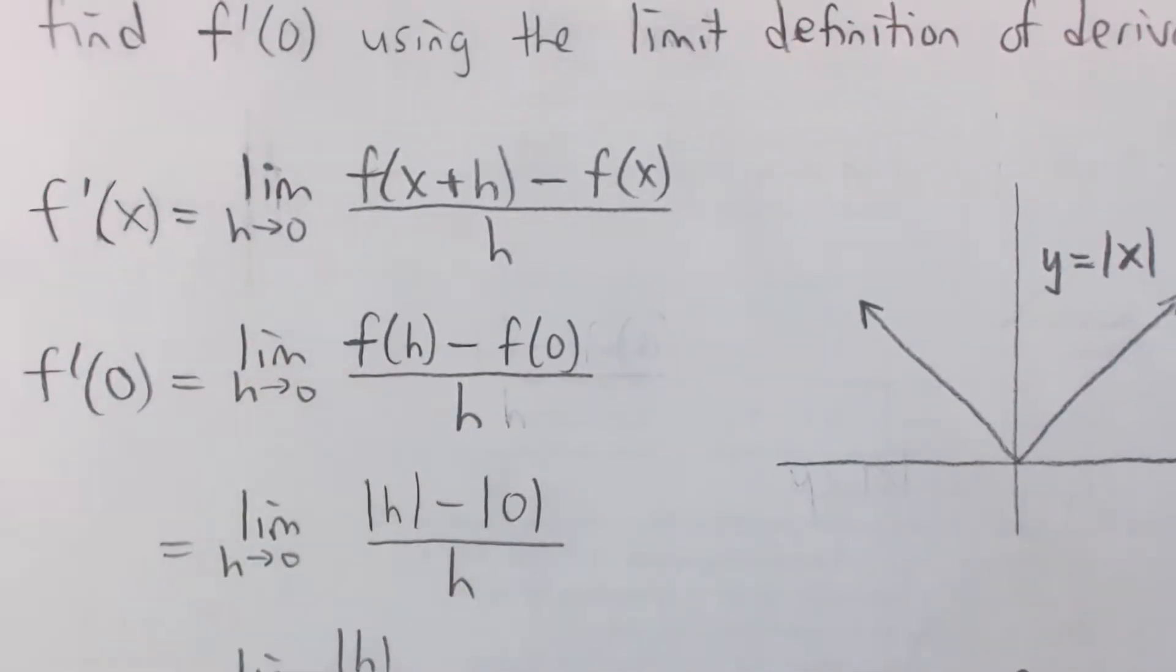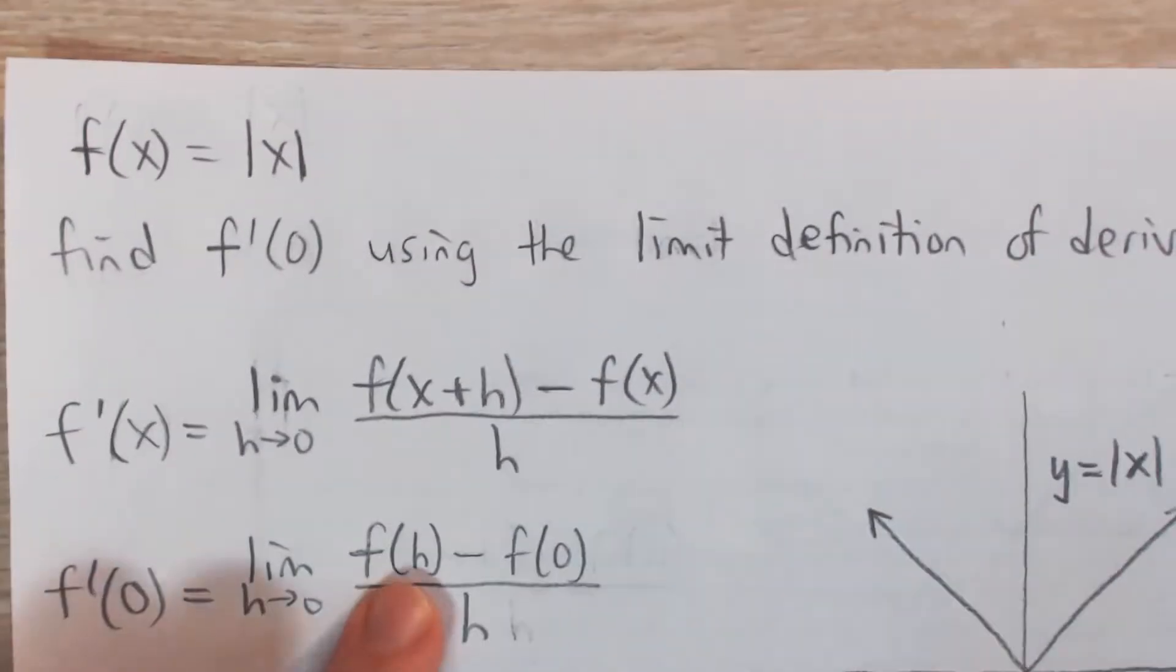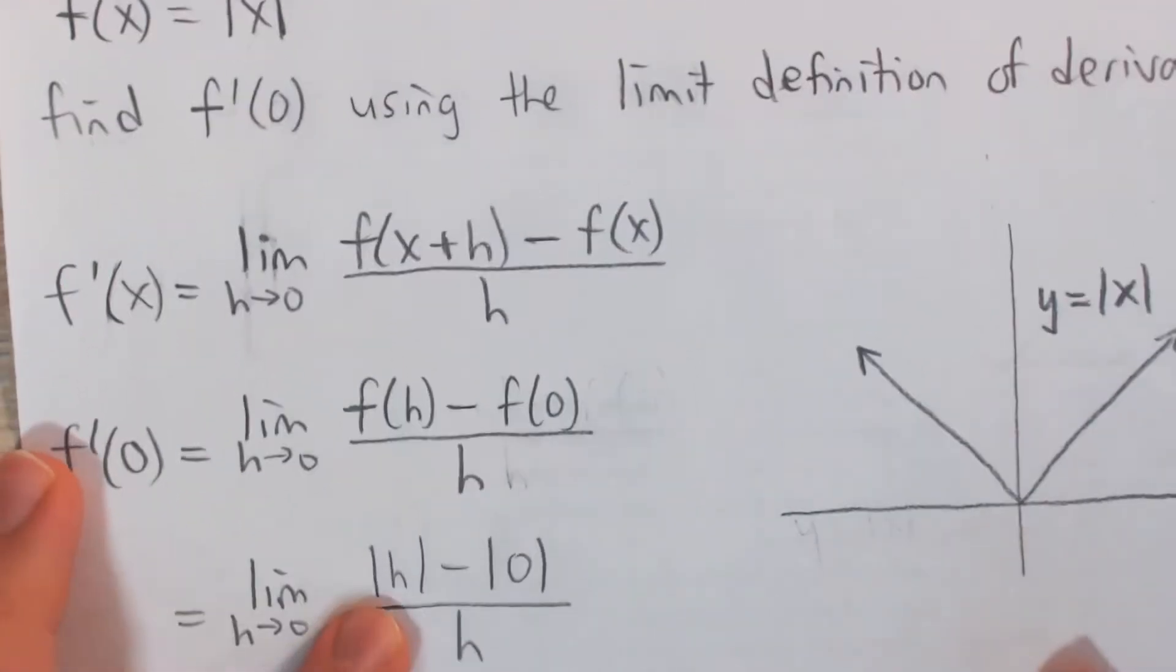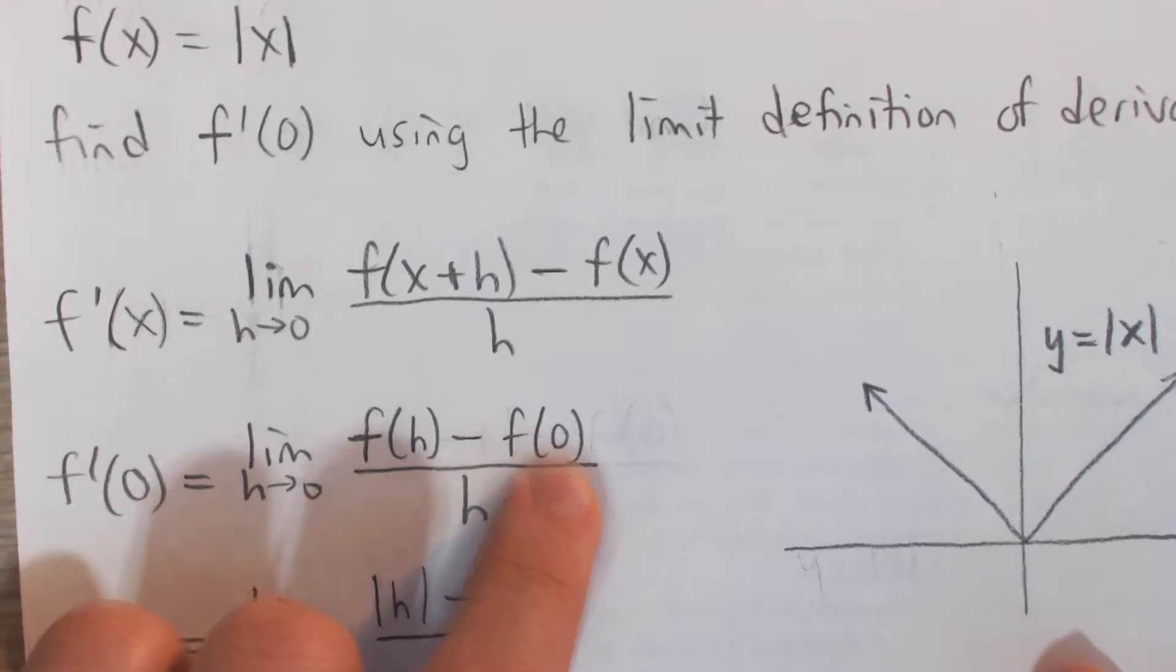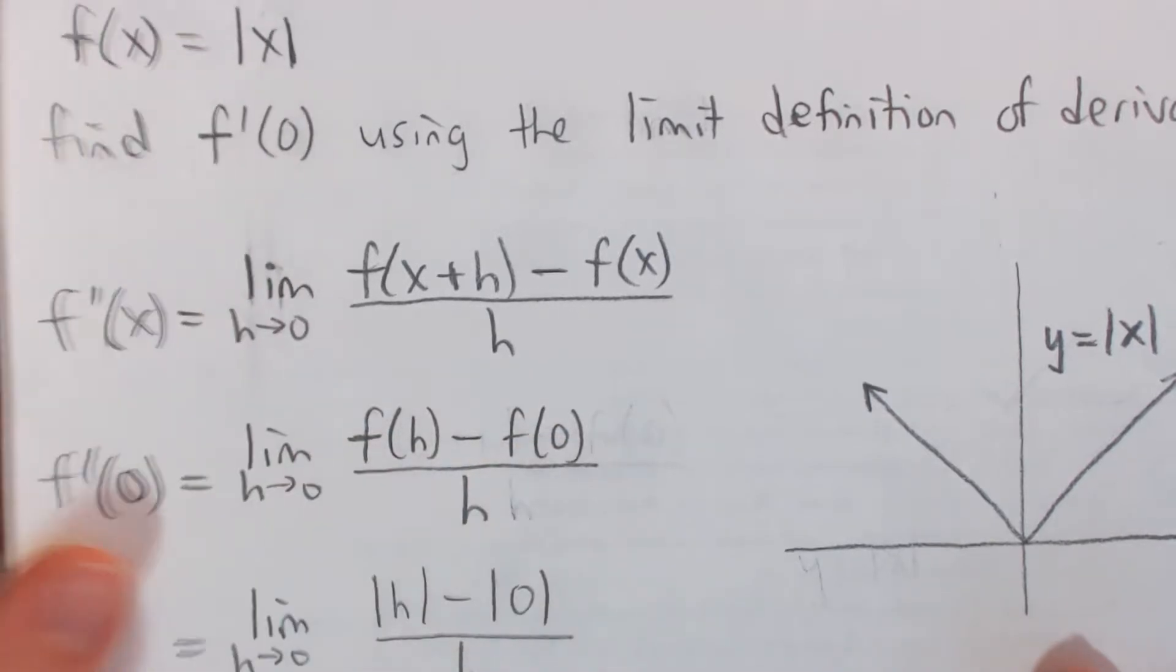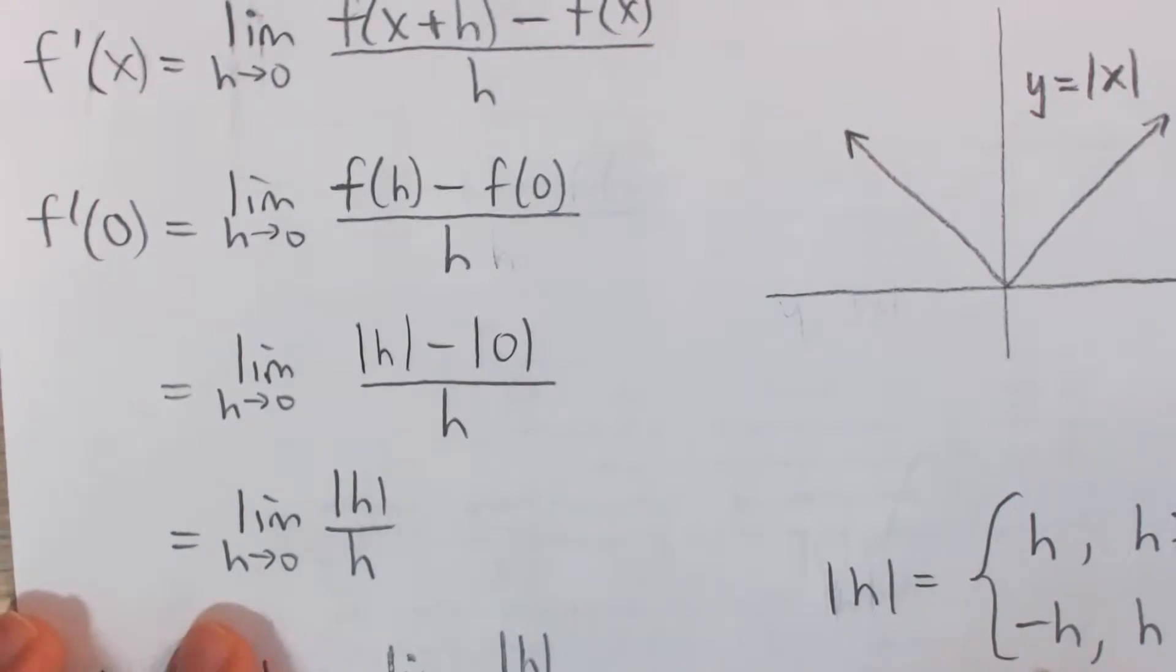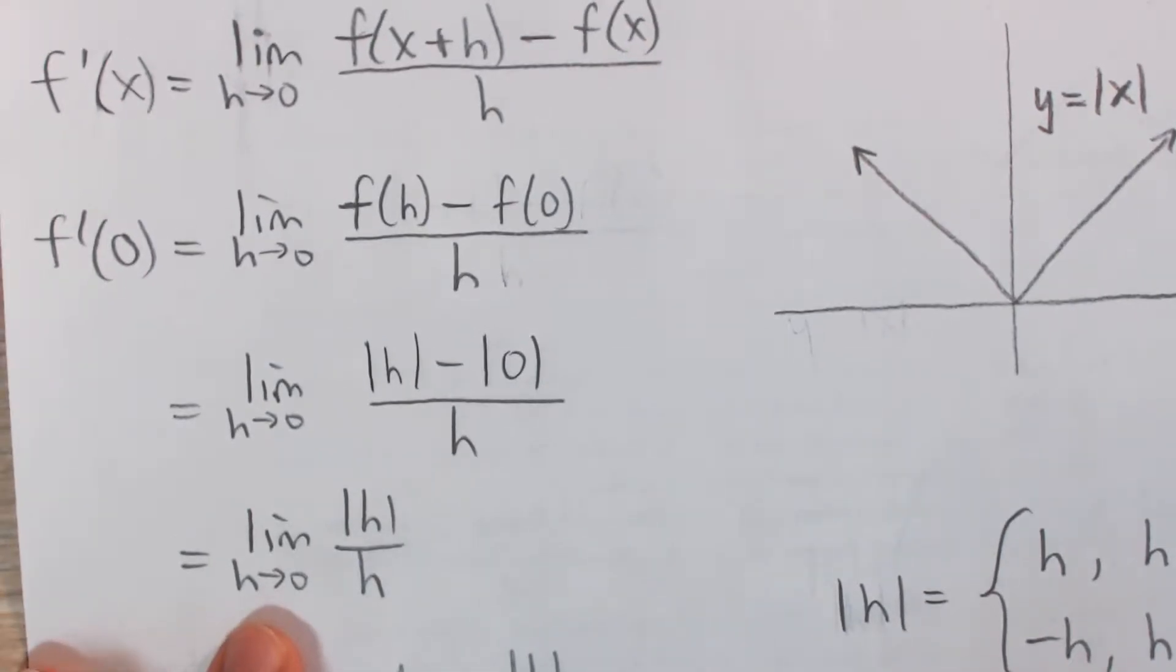So now we need to figure out what this limit is. First off, what is f of h? Well, it's just plugging in h for x in the absolute value function. In other words, that's just absolute value of h. And f of 0, again, it's just plugging in 0 for x in the function, so we have absolute value of 0 or 0. And so our limit simplifies to the limit as h goes to 0 of the absolute value of h over h.